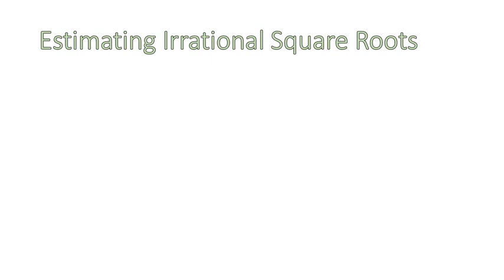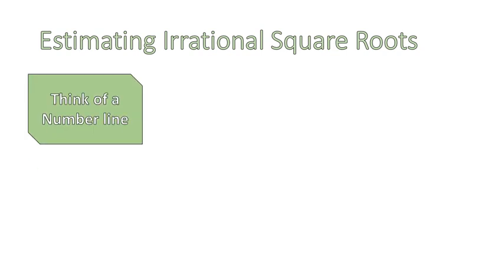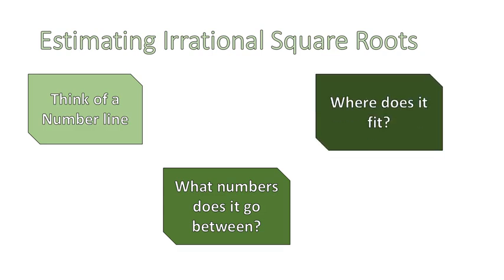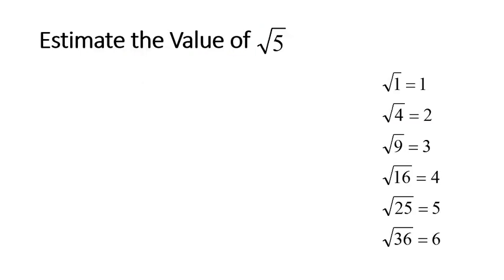Examples of irrational numbers include the square root of 2, the square root of 5, the square root of 7, 115, 99, 3, 24, 6 — all of these are irrational numbers. So what we're going to do today is actually estimate the value of these irrational numbers without using a calculator. We're going to think about a number line with all of the perfect squares on it, then ask ourselves which numbers our value goes between — where does it fit?